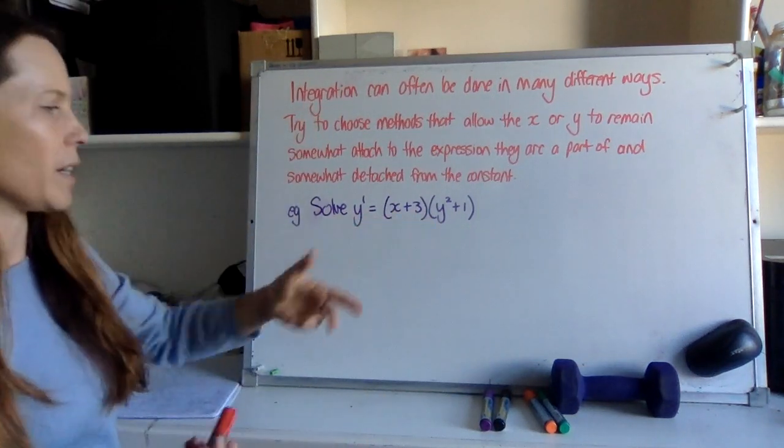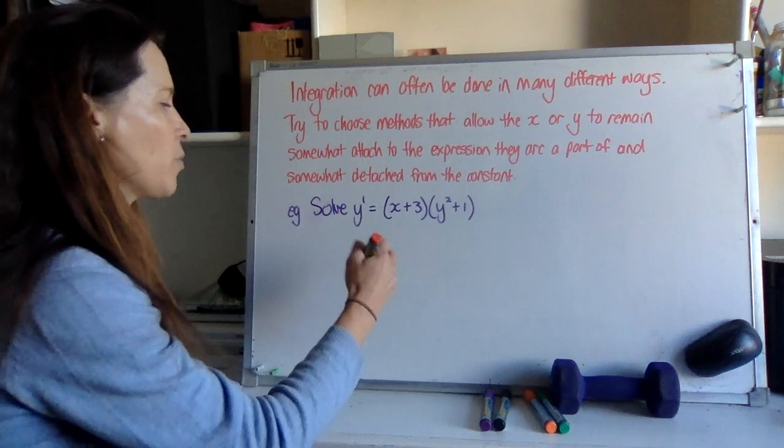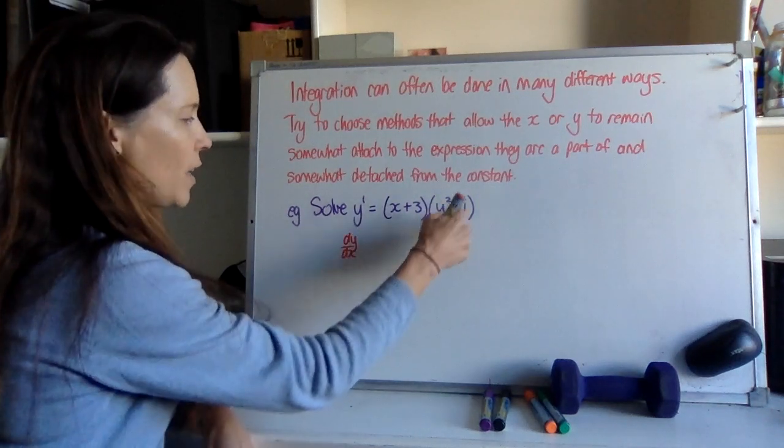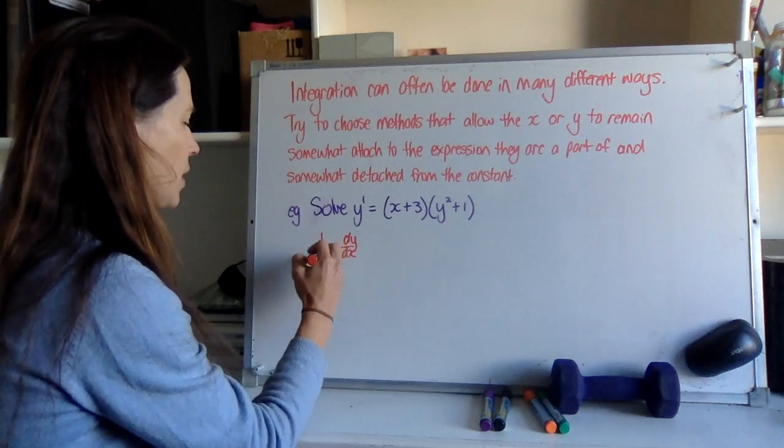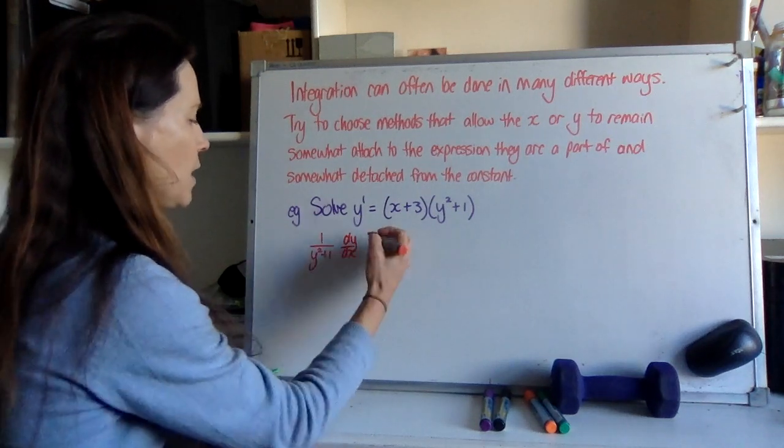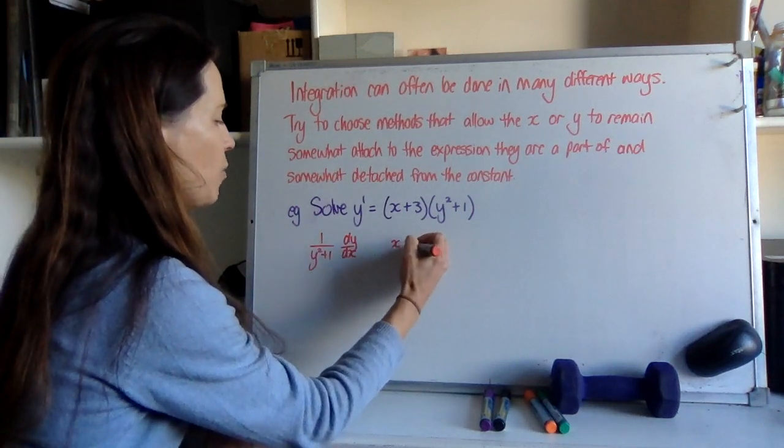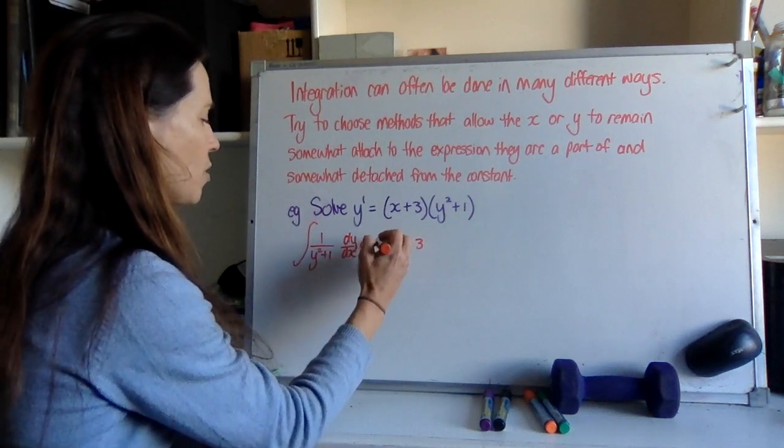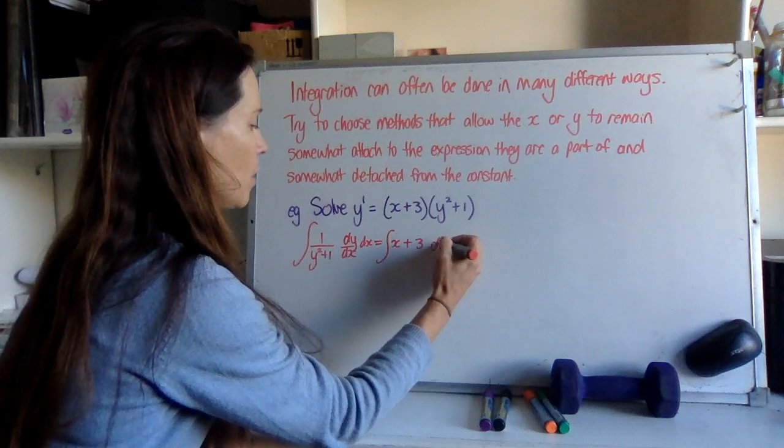The easiest way to understand this is to look at an example. If we go to integrate this, we're going to change our Y dash to dY/dX. We're going to divide by our function of Y. So we'll get this over here. And on the other side, we'll still be left with our X plus 3. So then when we integrate both sides with respect to X, we get this.